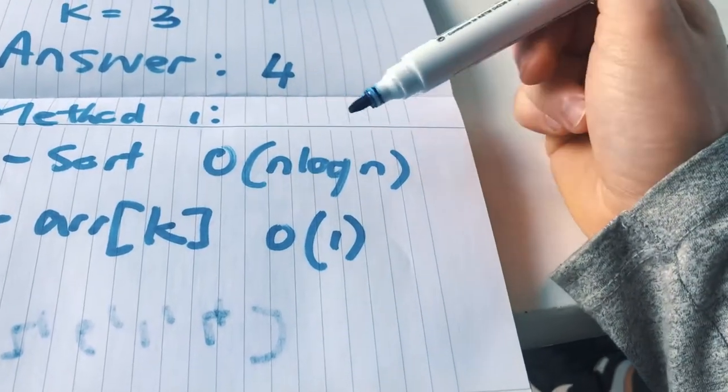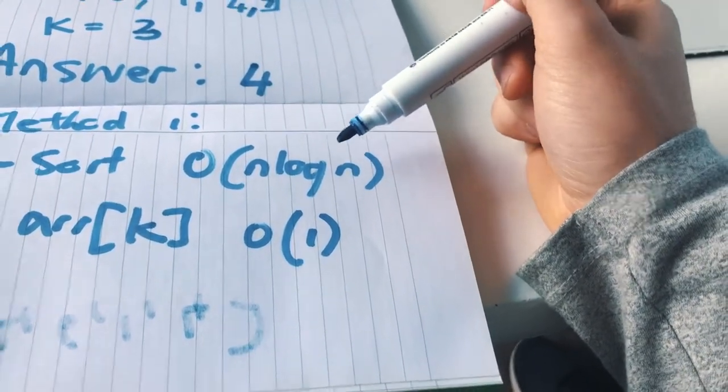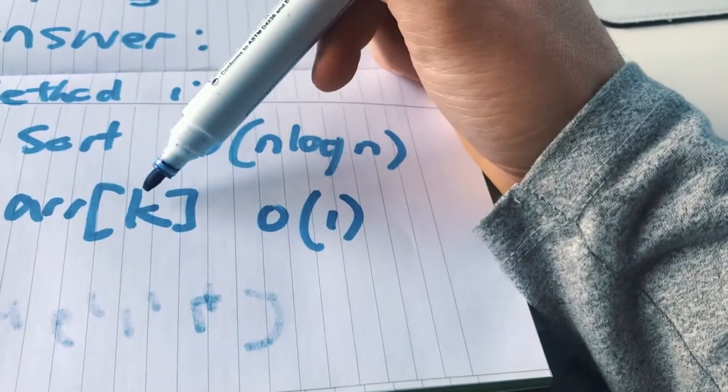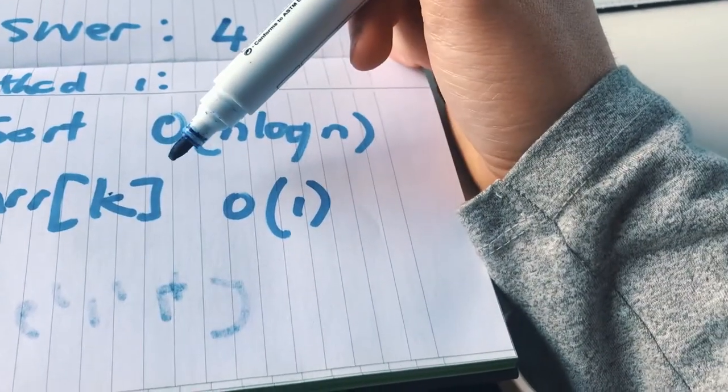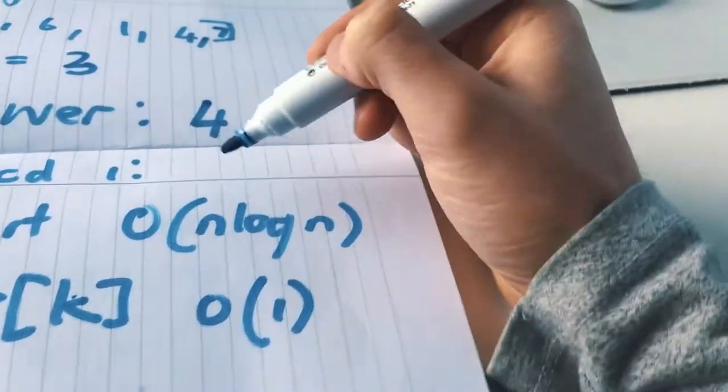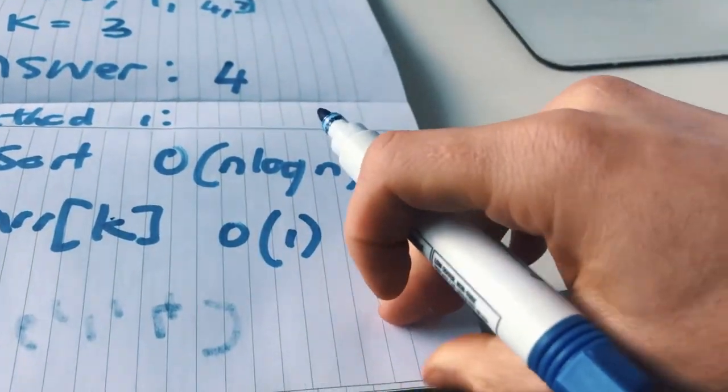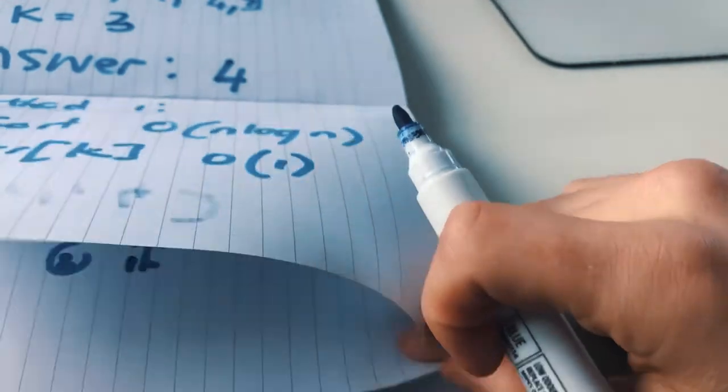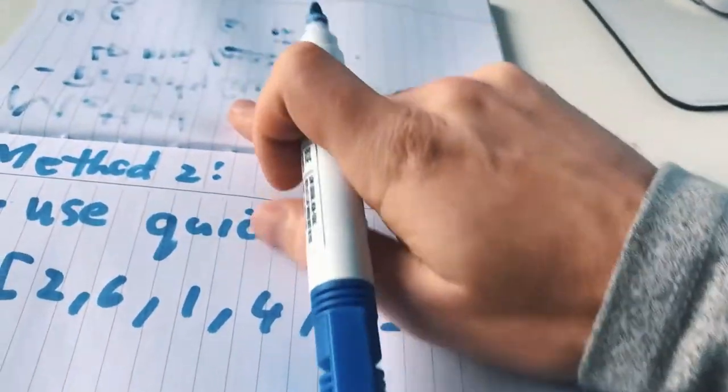Do it in n log n and then you would just need to get the kth element, or k minus 1 element, and then that would be big O of n log n, right? But there's another method that improves on that.